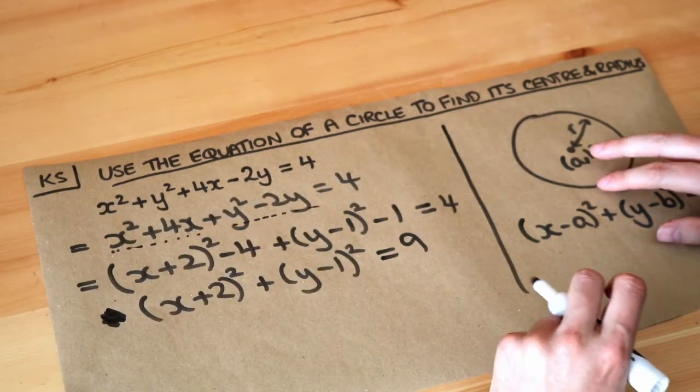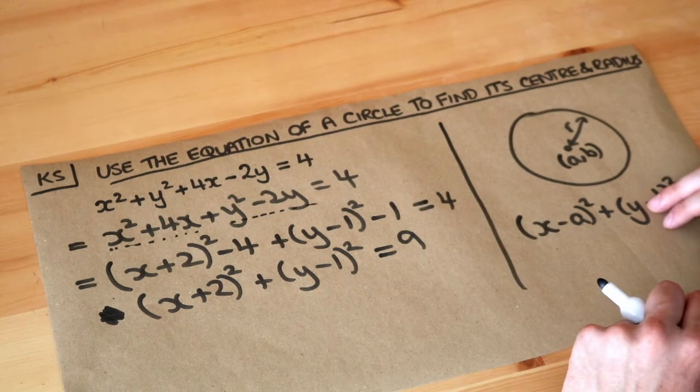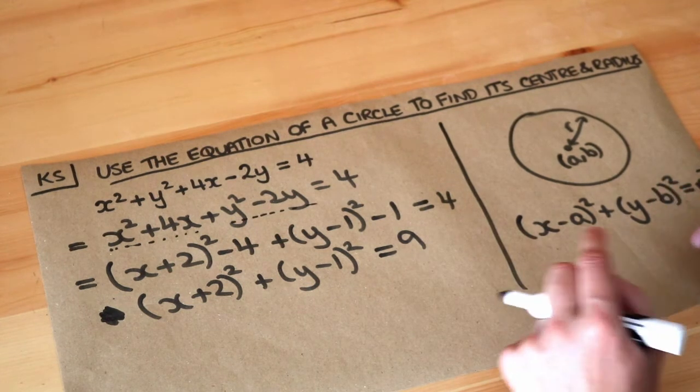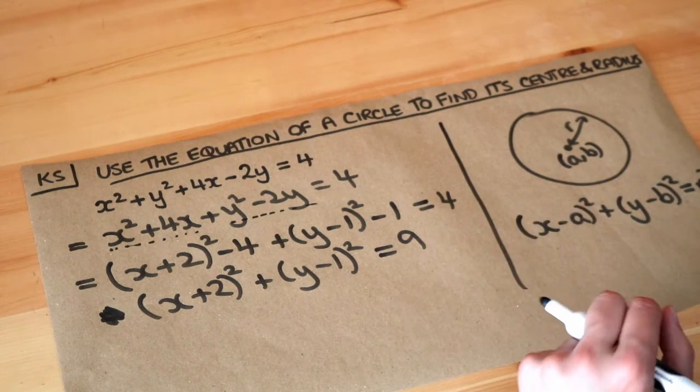So that is now the equation of your circle, and from that we can then find the center and radius of the circle.